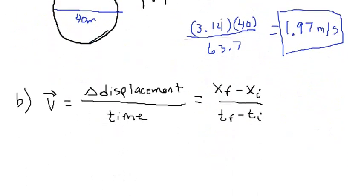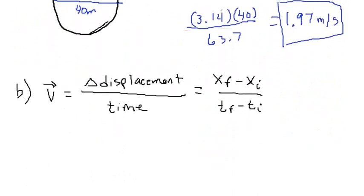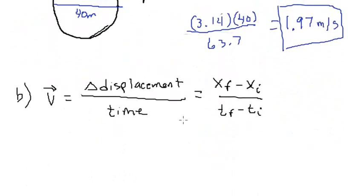You're going to see how the formulas change a little bit. In average speed, it was the change in distance, but in average velocity it is the change in displacement. So let's go ahead and do this.